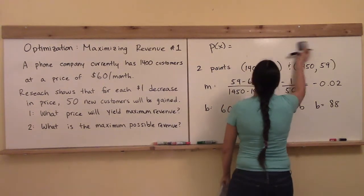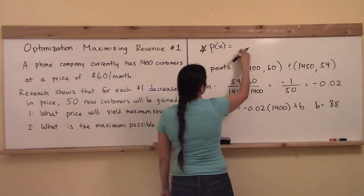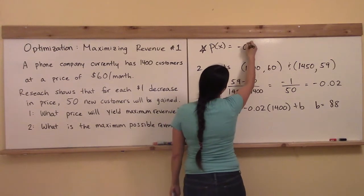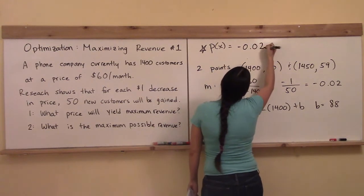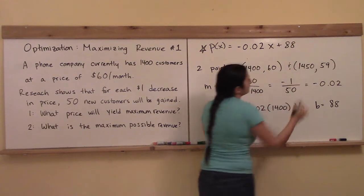So then we can just, we're already done with this first step in our strategy, which was get P(x) and the answer is negative 0.02x plus 88.